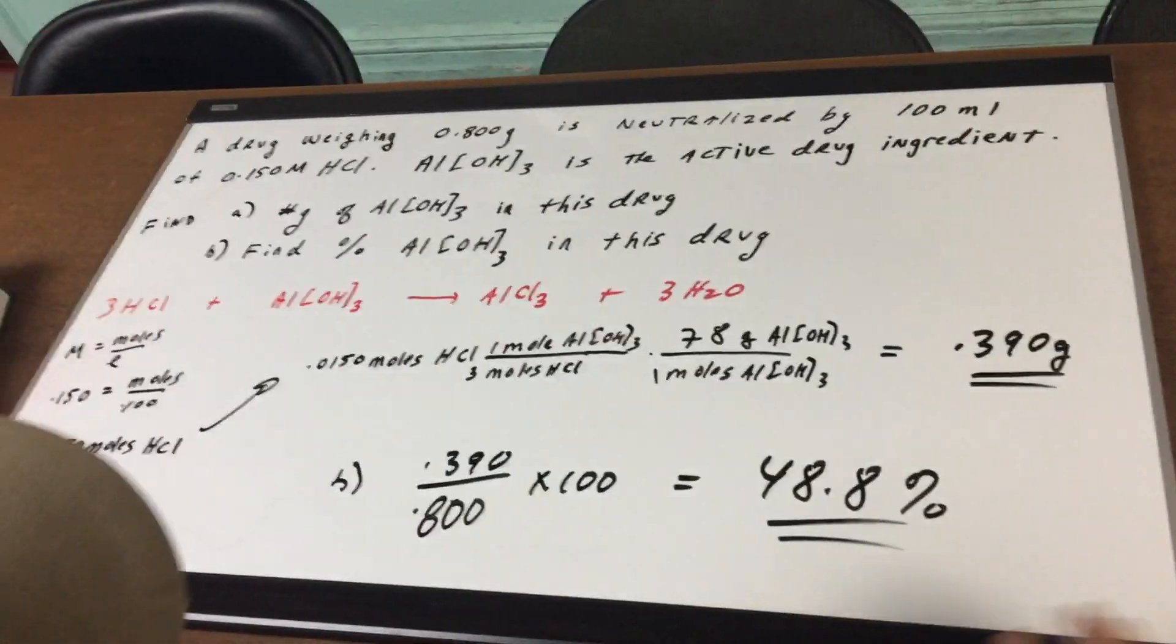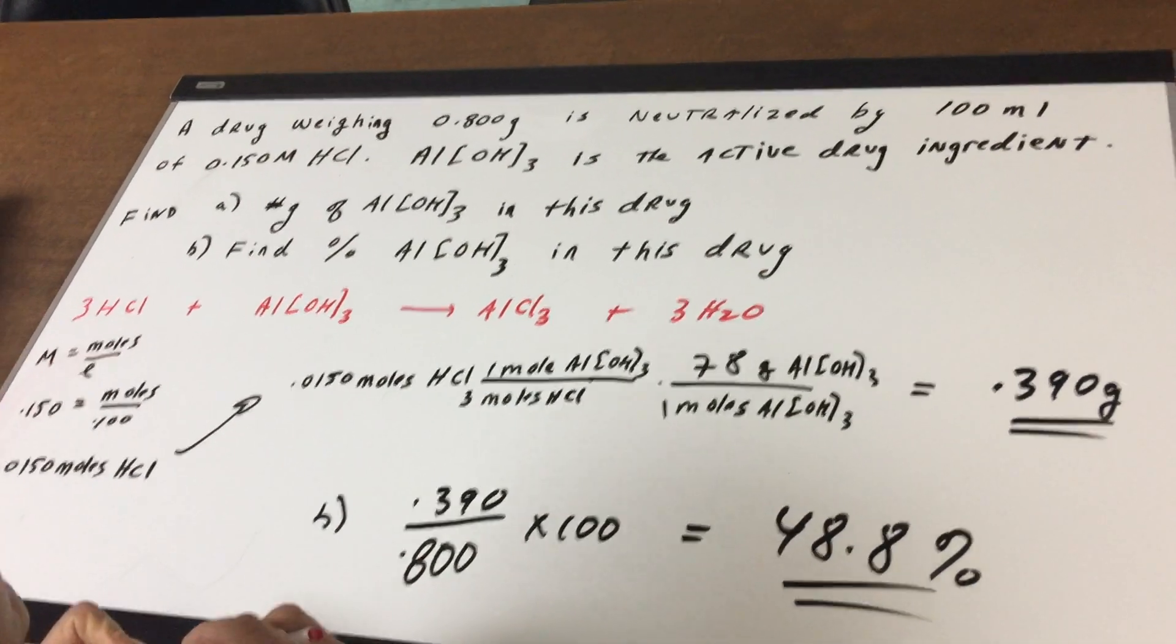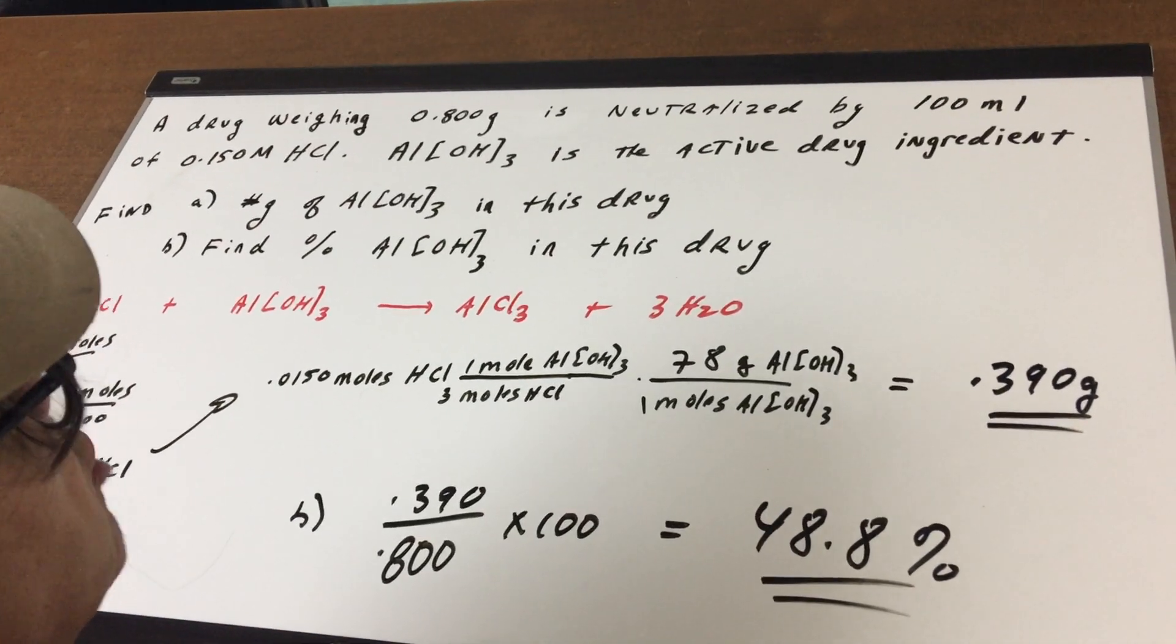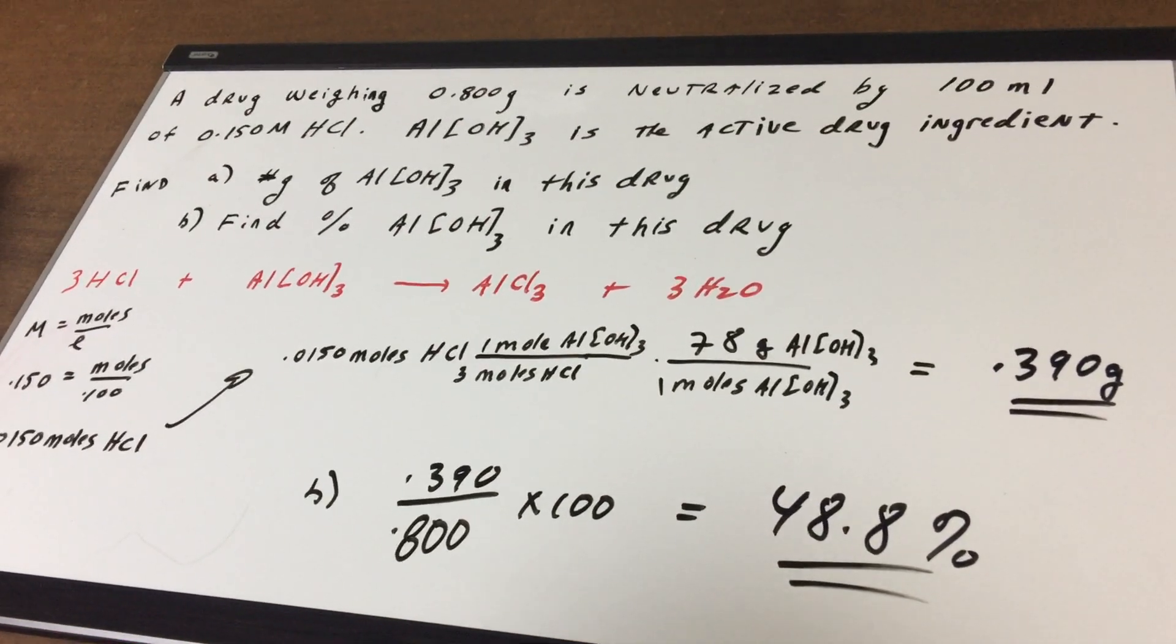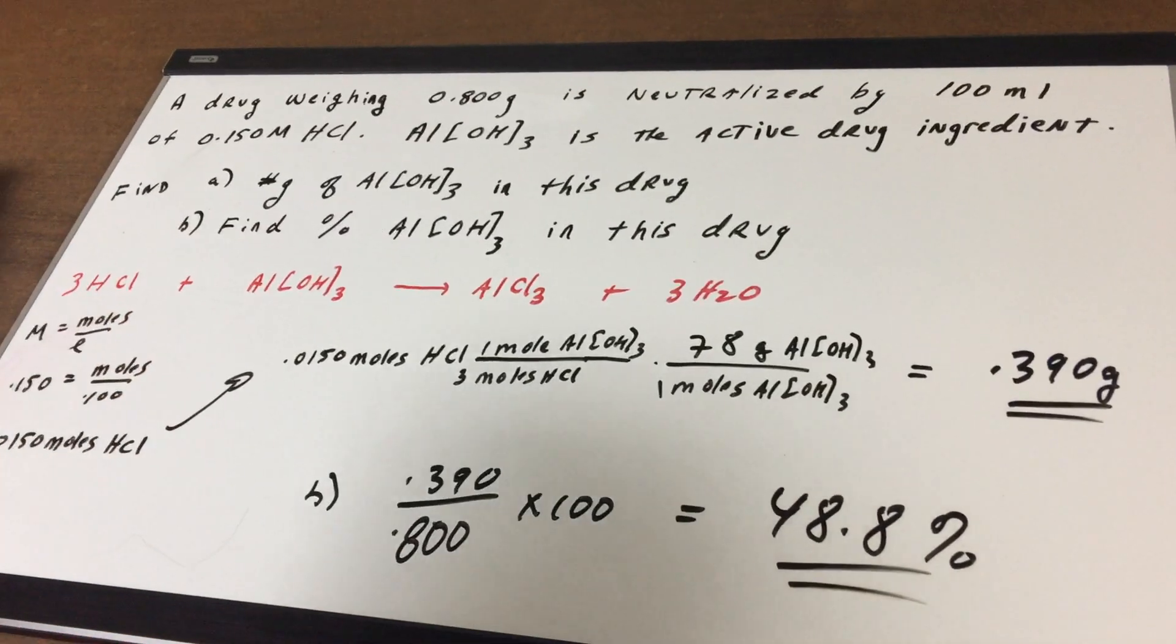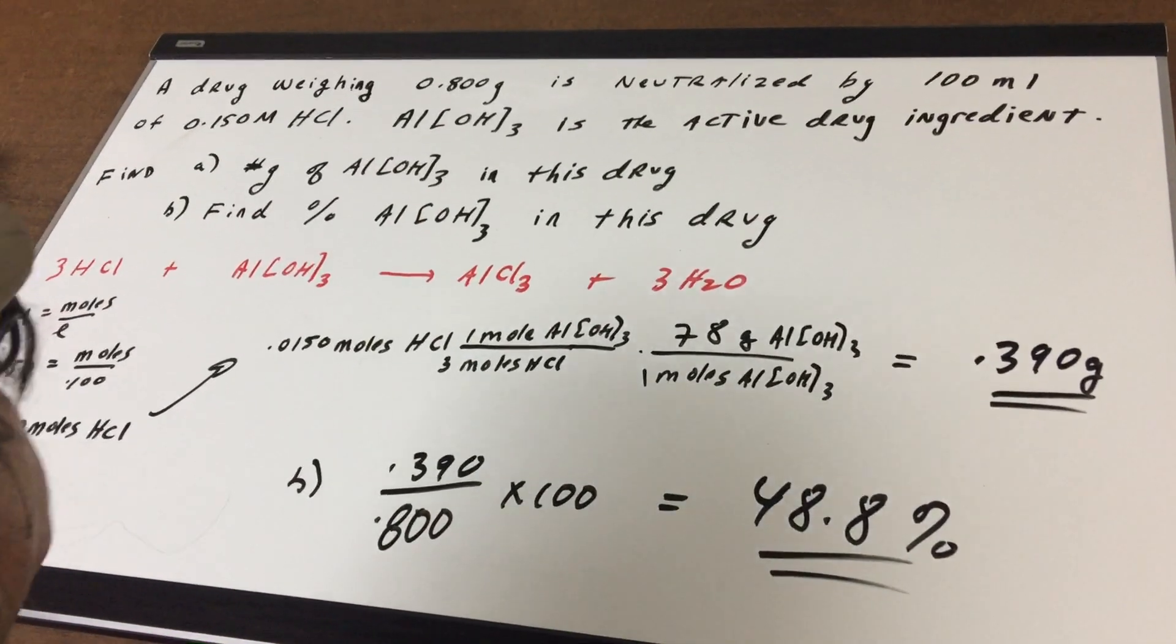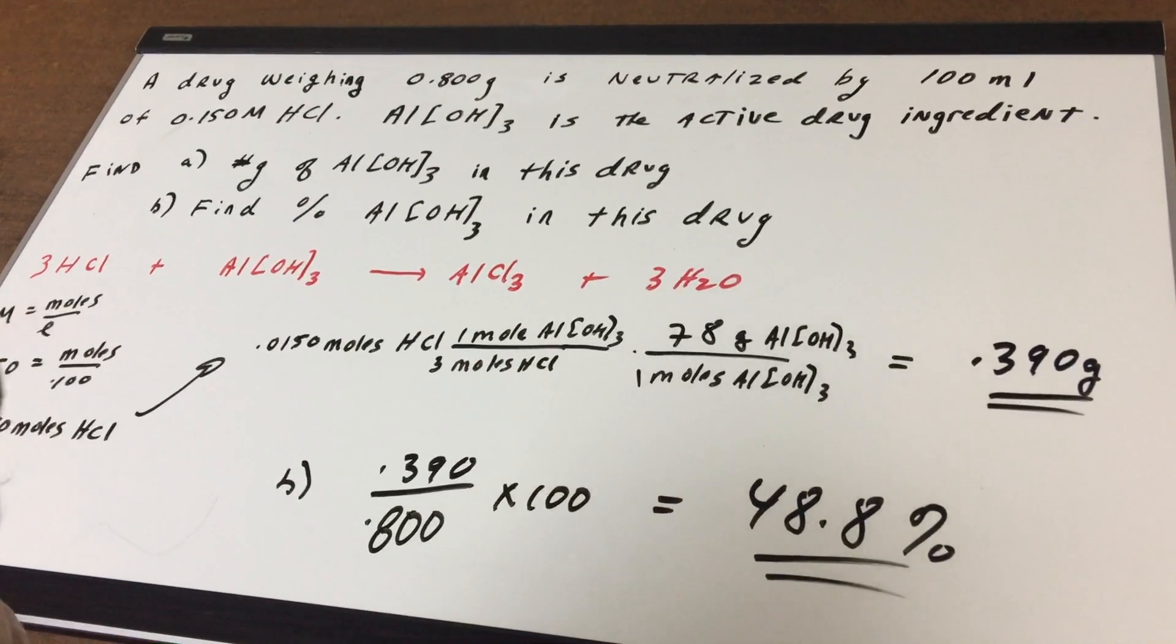What we have here, it says that we have a drug weighing 0.800 grams, is neutralized by 100 milliliters of 0.150 HCl. Aluminum hydroxide is the active drug ingredient. Now what we want to do is to find the number of grams of aluminum hydroxide in this drug.